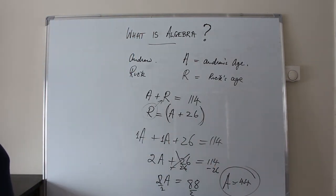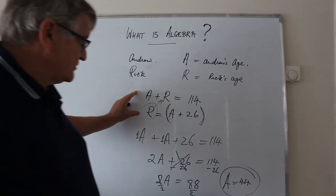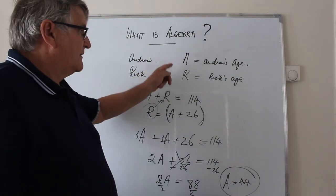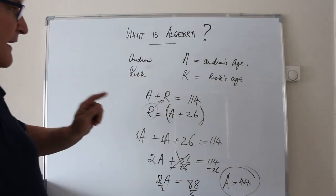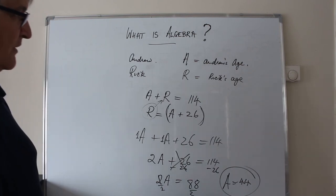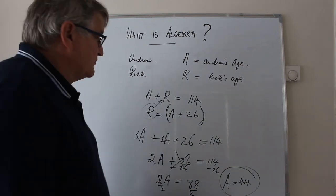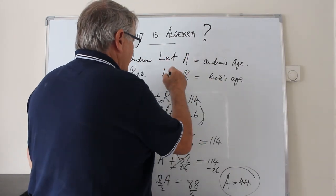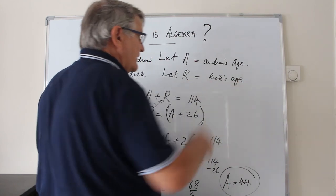There's lots of fabulous relationship style problems that are made much easier by using algebra. And in the early days, when I first learned algebra, my year 7 teacher used to make me write, let A equals Andrew's age and let R equal Rick's age.